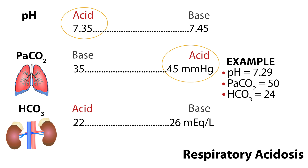If the pH is 7.29, it's less than 7.35, so it is acidic. The PaCO2 is 50 — greater than 45 — so it is acidic. The HCO3 is 24, which is normal. Since the pH is acidotic and the CO2 is acidotic, we know the acid-base disturbance is being caused by the respiratory system, and is called respiratory acidosis. Since PaCO2 is high and represents lung function, it tells us there is excess CO2 retention from hypoventilation or CNS depression.